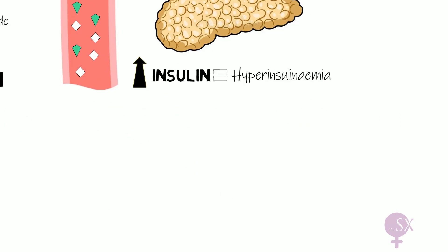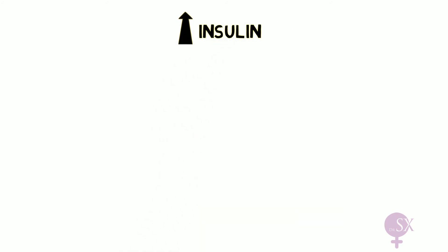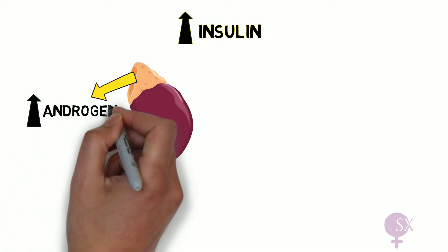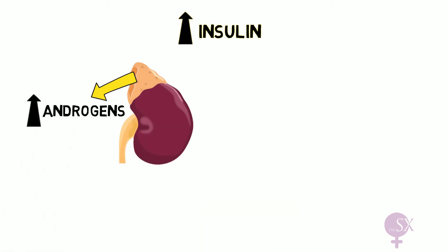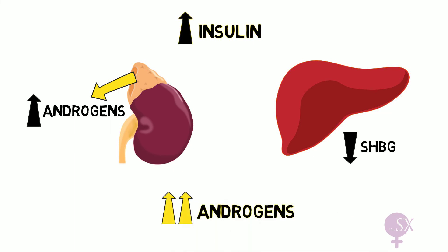Additionally, high levels of insulin result in increased production of androgens from the adrenal glands, as well as reduced production of sex hormone binding globulin from the liver. This overall results in increased levels of androgens, enforcing the state of hyperandrogenism in PCOS.